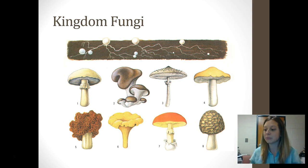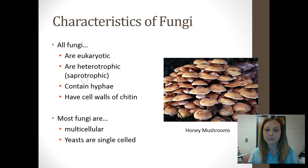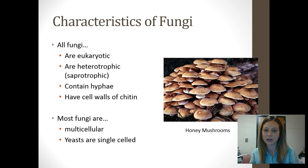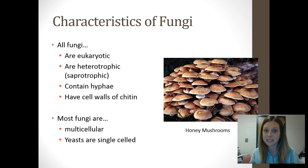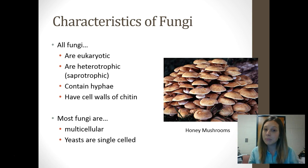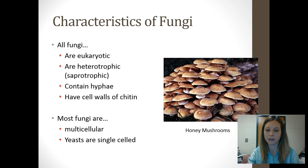That is the end of Kingdom Protista, so we're moving on to Kingdom Fungi. What makes a fungus a fungus? Fungi are eukaryotic, of course, since they're in domain Eukaryote. They are heterotrophic — they do not photosynthesize. They get their food by decomposing dead and decaying material, so we call them saprotrophs. They contain hyphae, and they have cell walls made of a chemical compound called chitin. Most fungi are multicellular, but yeast is actually a group of unicellular fungi.